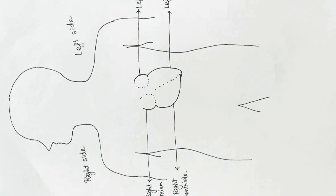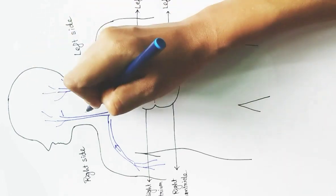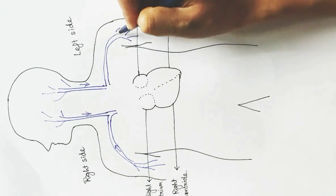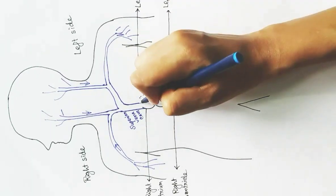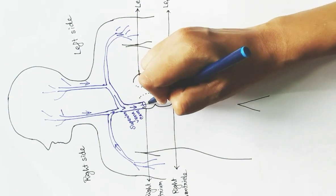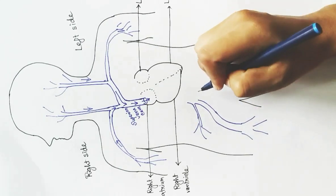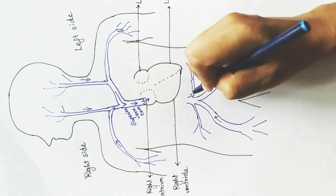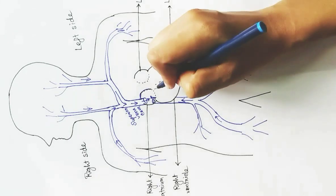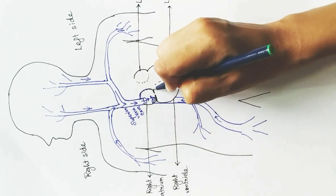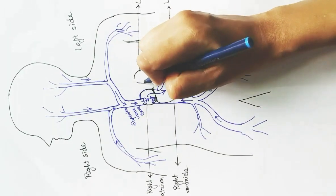Blood brings carbon dioxide from all the cells of the body towards the heart. Carbon dioxide from the upper part of the body — the two arms, the brain, and those organs — comes to the heart through the superior vena cava. Carbon dioxide-rich blood from the lower part of the body, such as the lower limbs and organs, comes to the heart through the inferior vena cava. Both veins bring carbon dioxide-rich blood to the right atrium.